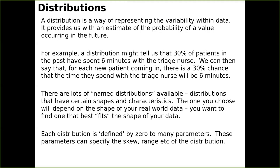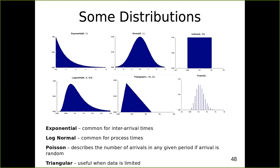There are lots of named distributions available — distributions with certain shapes and characteristics. Most real-world data will fit one of these particular distributions, and each is defined by zero to many parameters. Some have no input parameters whatsoever; others require things like the mean, which then specifies the size and shape of the distribution. In particular, exponential and log-normal distributions you will find yourself using quite a lot within your modelling, because they're actually pretty good fits for inter-arrival times and process times in real-world data. They're your go-to distributions for this kind of modelling work.